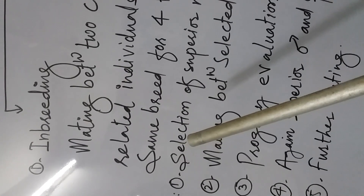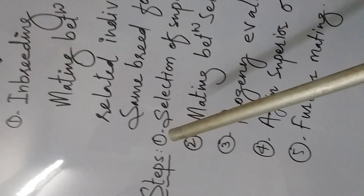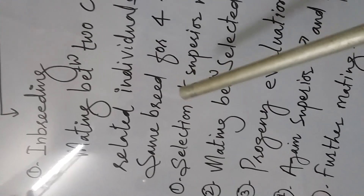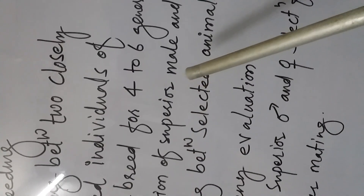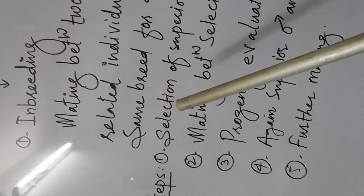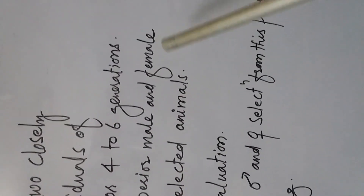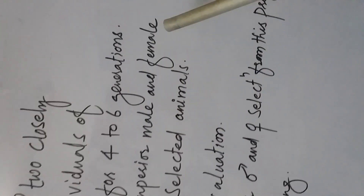The steps of the inbreeding method involve the following. Step number one is the selection of a superior male and a superior female. From the cattle you are going to inbreed, you have to identify and select which one is a superior male and which one is a superior female for the inbreeding process.